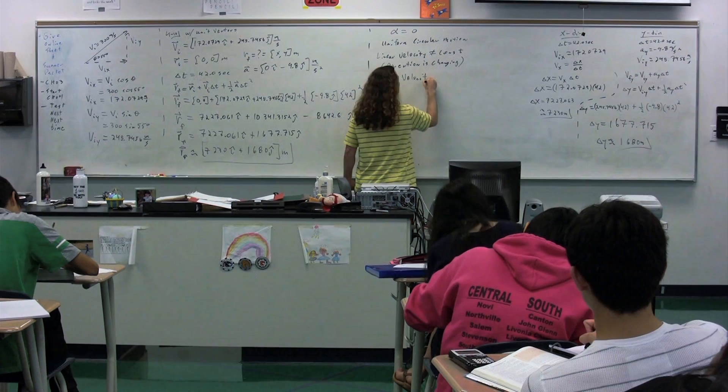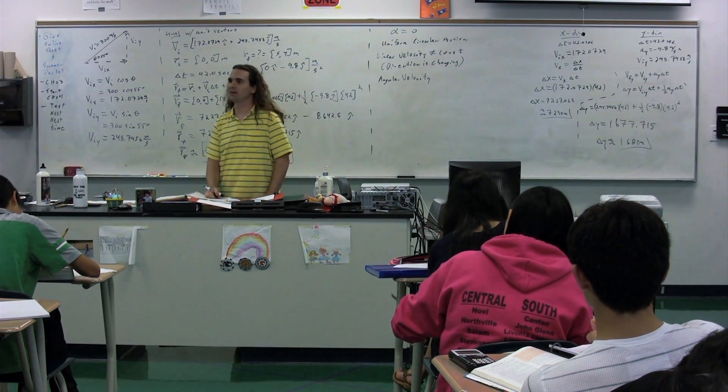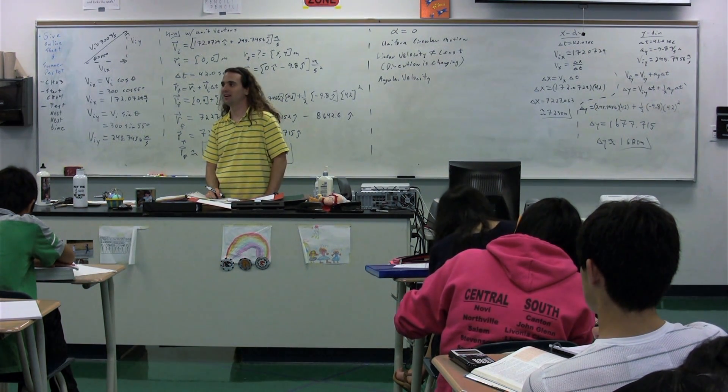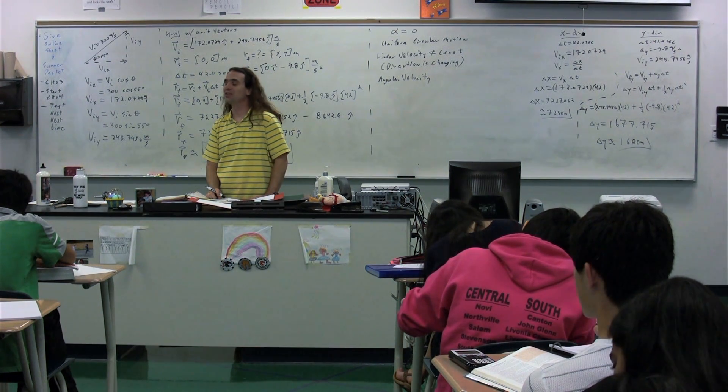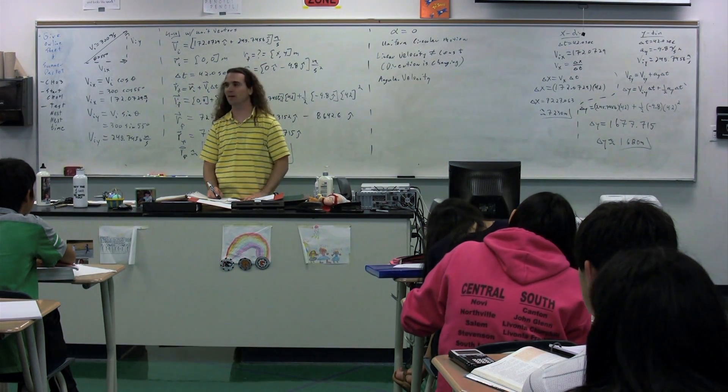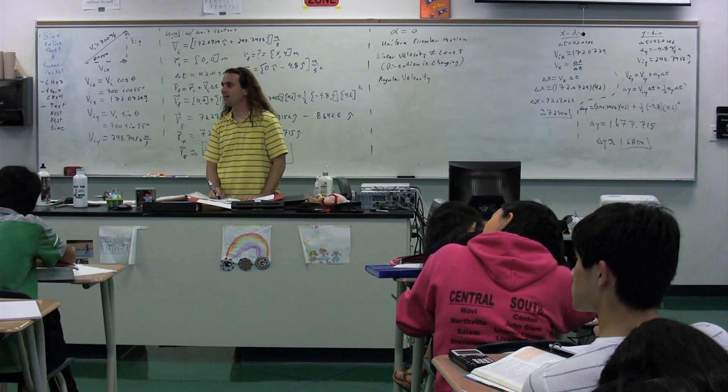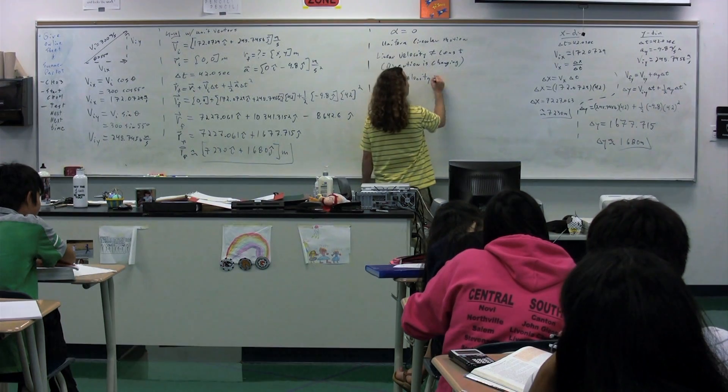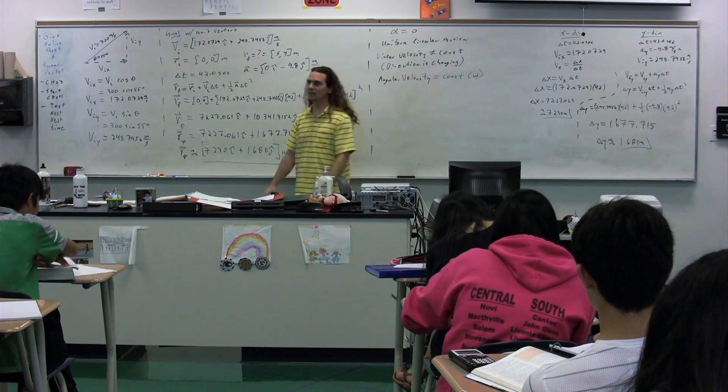So in uniform circular motion, the symbol for angular velocity is, Kevin? Omega. Omega. And omega looks like what, Sarah? That would not be an omega. Well, that would be a capital omega. I apologize. But that's not the one we're talking about here. Nicolai. It's like a curly W. So angular velocity is constant.